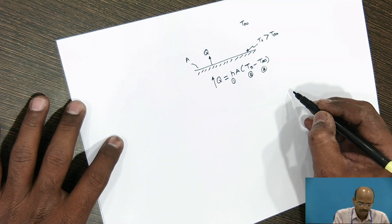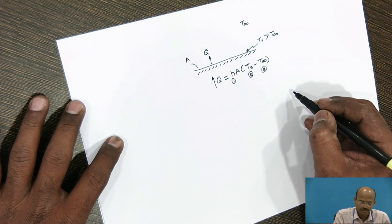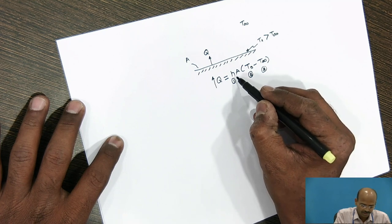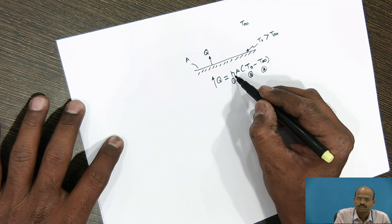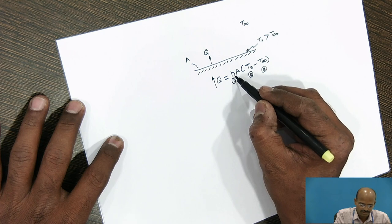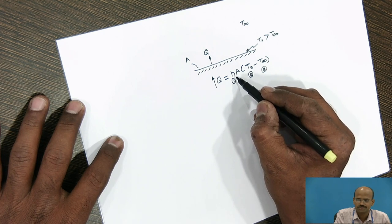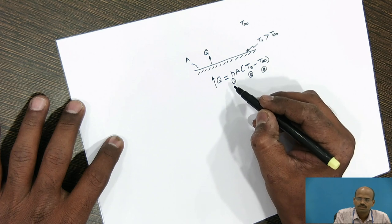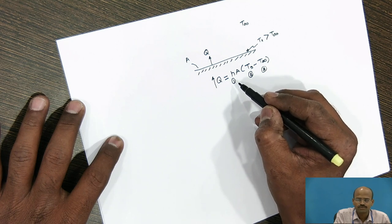Now, in the convective heat transfer, there are limitations for increasing the H. Now, H means convective heat transfer coefficient, which depends upon the free convection and forced convection.